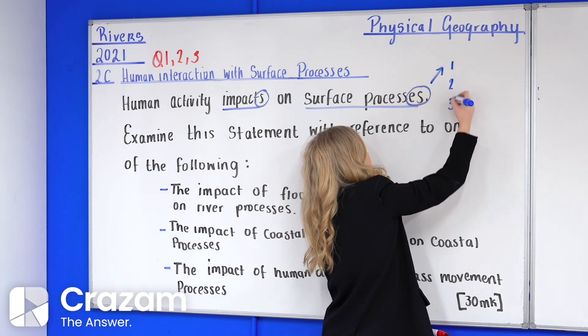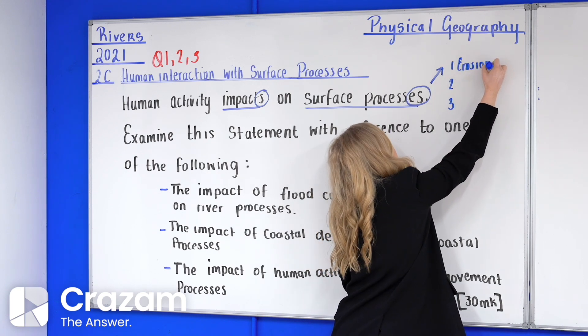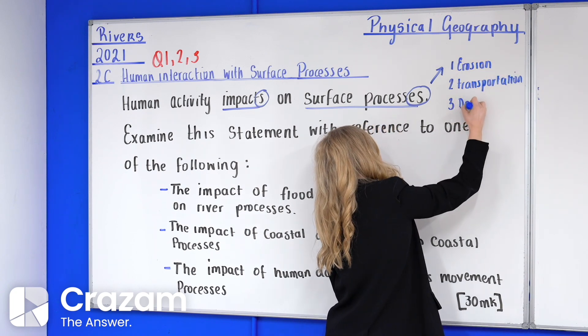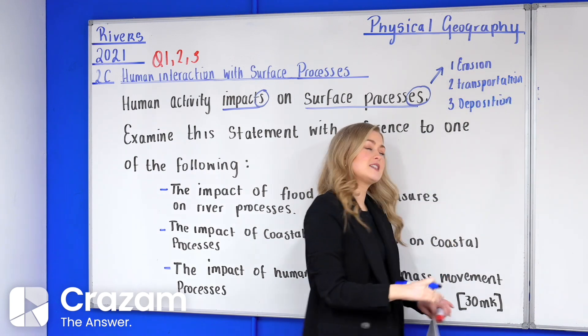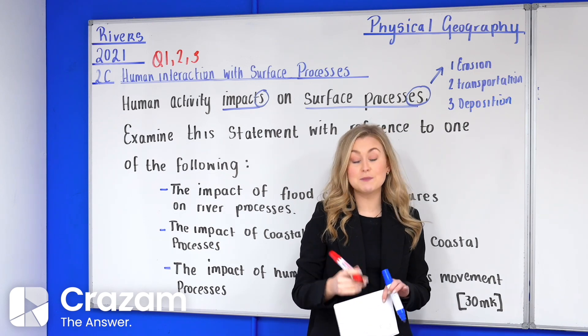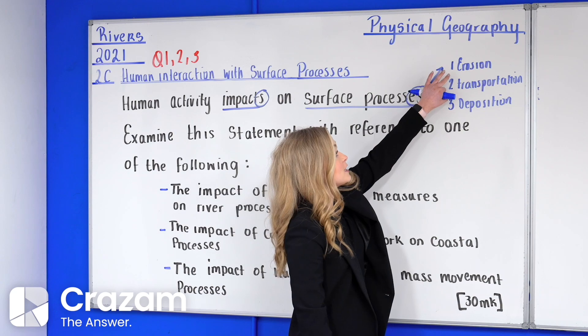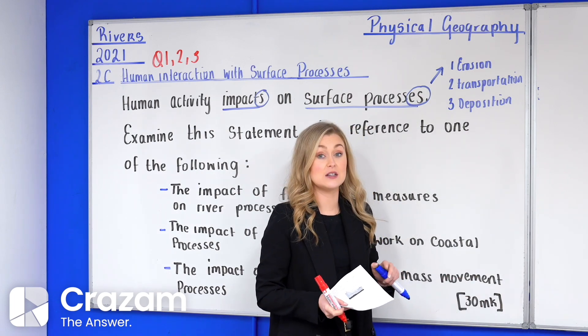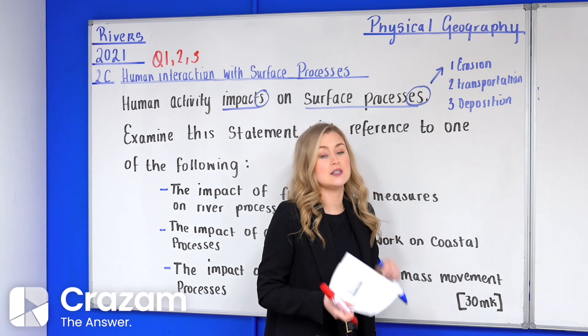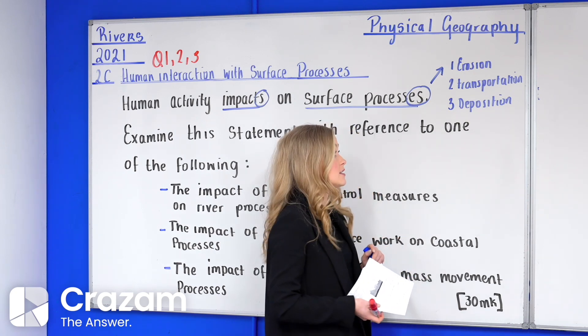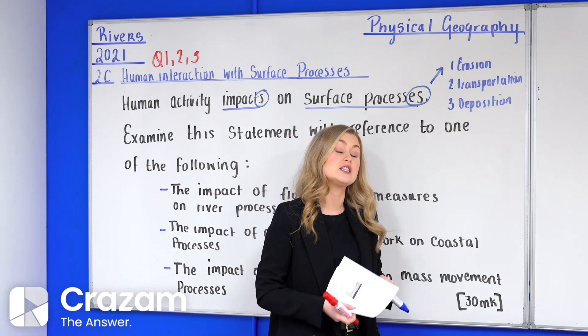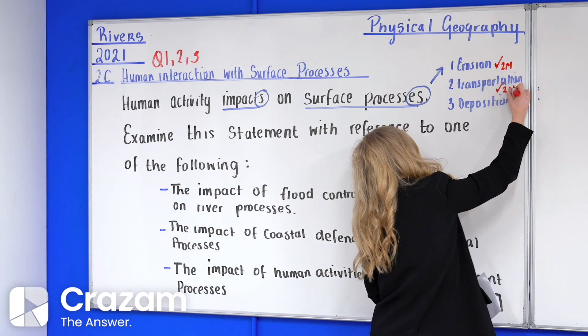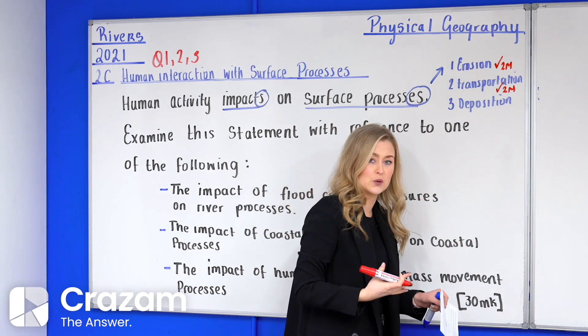Now surface processes would be the impact on either one of the three of the following. You have three surface processes: erosion, transportation and deposition. The examiner has allocated two marks plus two marks for the explanation of these impacts. For example there's an increased rate of vertical and lateral erosion on the downstream side of the dam. Either of those two explanations would get us two marks plus two marks, not just for the words but for those explanations.